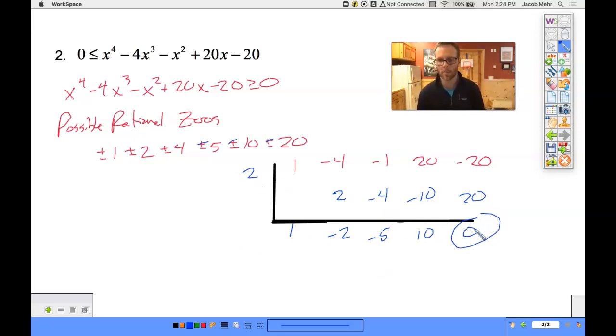Notice it's not an upper bound, so we might have one bigger. But I'm going to jump right in. I'm going to try this again. Let's see if 2 works again. And it does. Don't forget to look for repeated zeros.